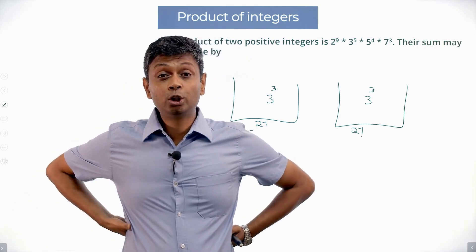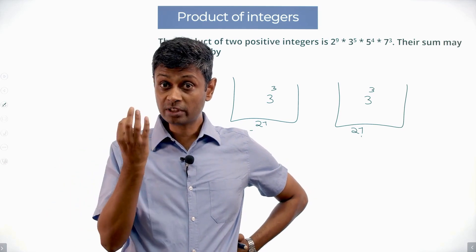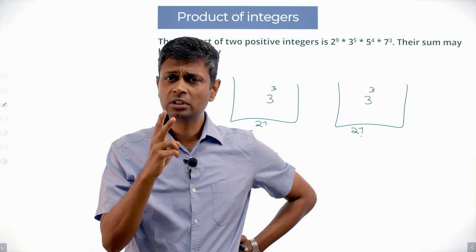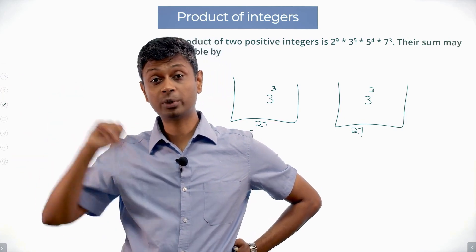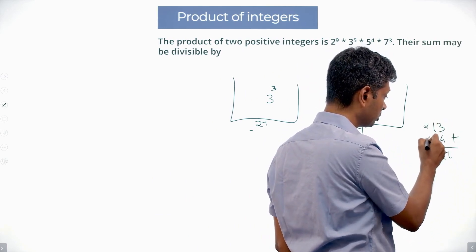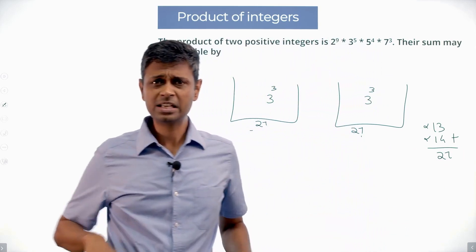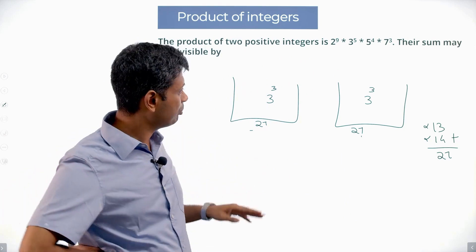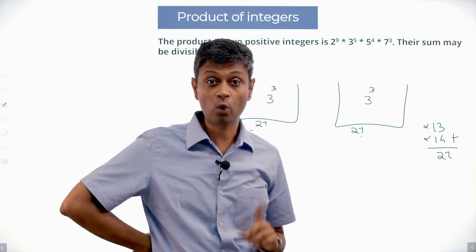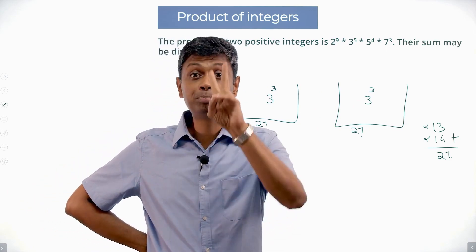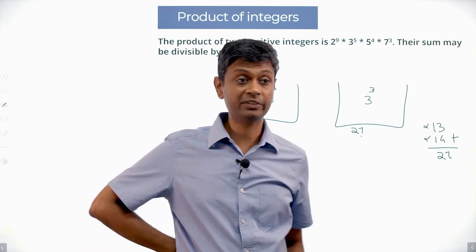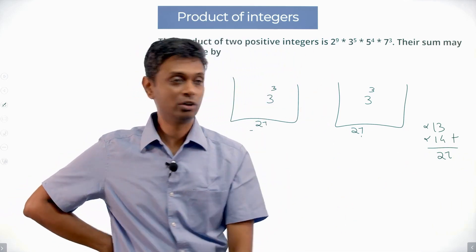Here's the key argument: if I add two multiples of 27, I get a multiple of 27. But if one number is a multiple of 27 and the other is not, their sum cannot be a multiple of 27. Can two non-multiples of 27 add to a multiple of 27? Yes — like 13 + 14 = 27. However, with only five 3s, any split forces exactly one number to have 3³ (a multiple of 27) and the other to have fewer than three 3s. Adding a multiple of 27 to a non-multiple of 27 never gives a multiple of 27. So 27 is ruled out.